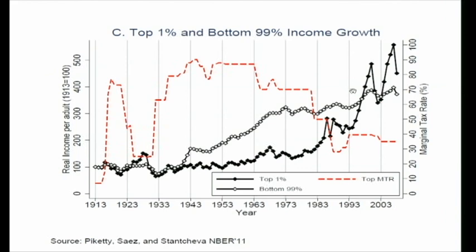This is just time series evidence, but it seems more consistent with a scenario where you have rent seeking. That is, when taxes are high, it's hard for top incomes to bargain for significant pay, and it's easier for bottom incomes to increase. The reverse happens when top taxes come down.